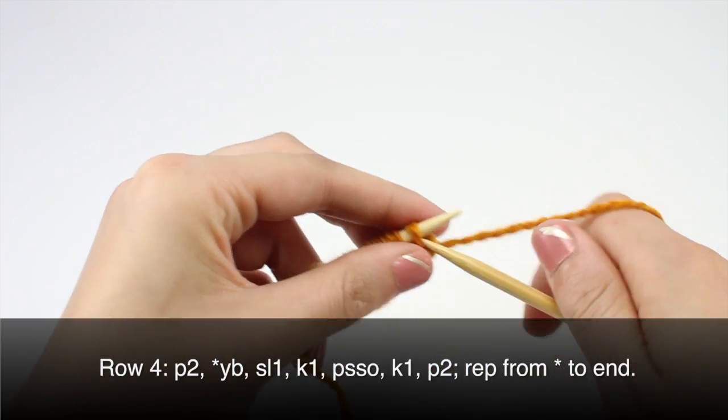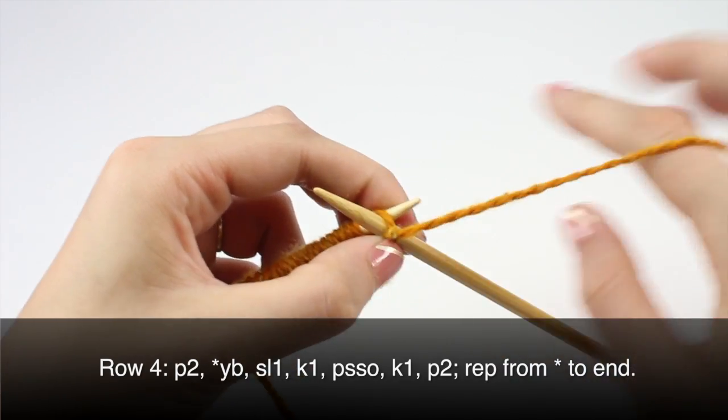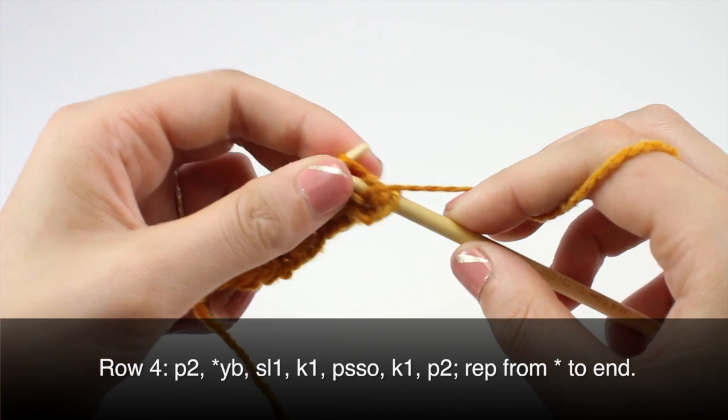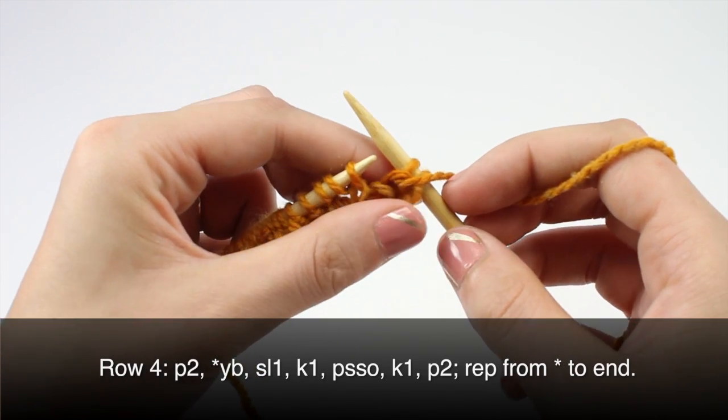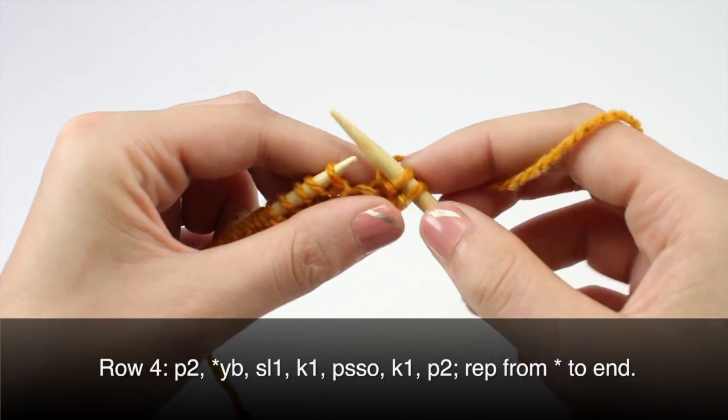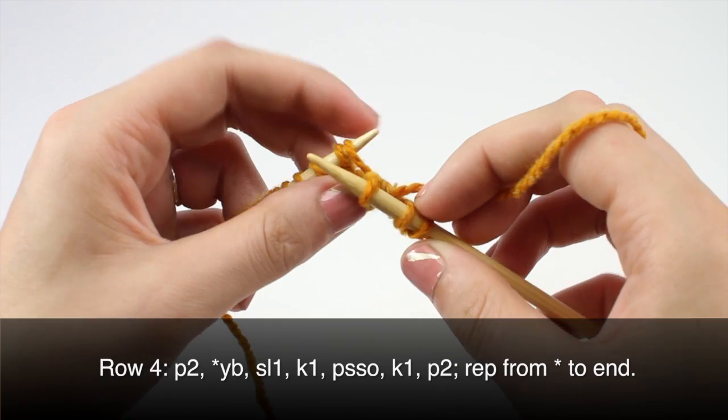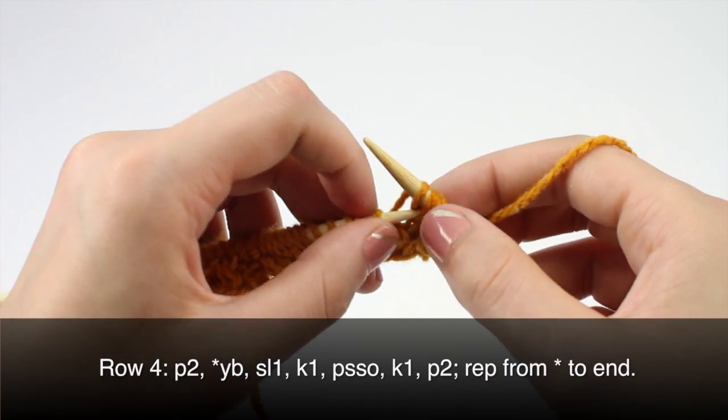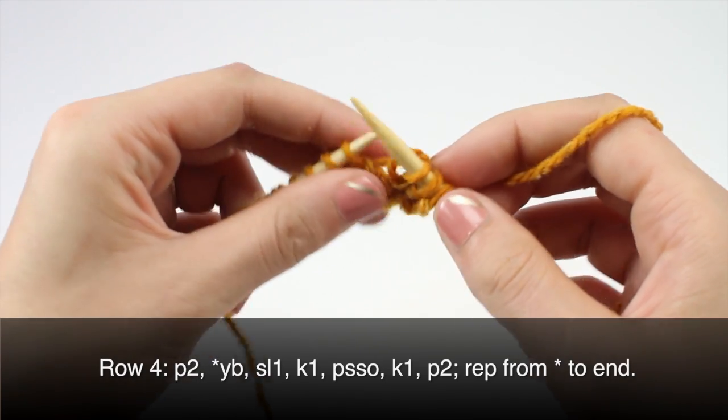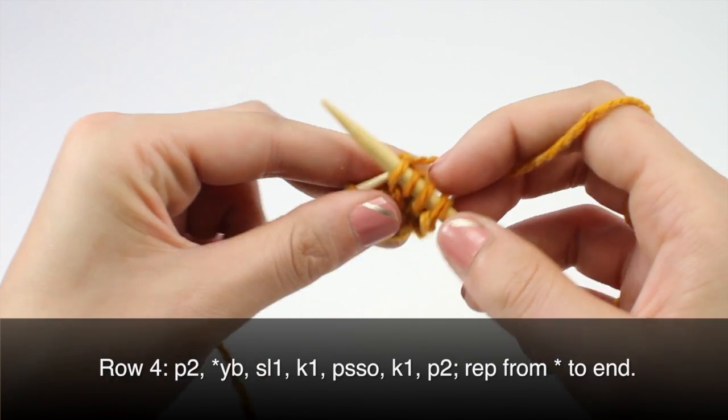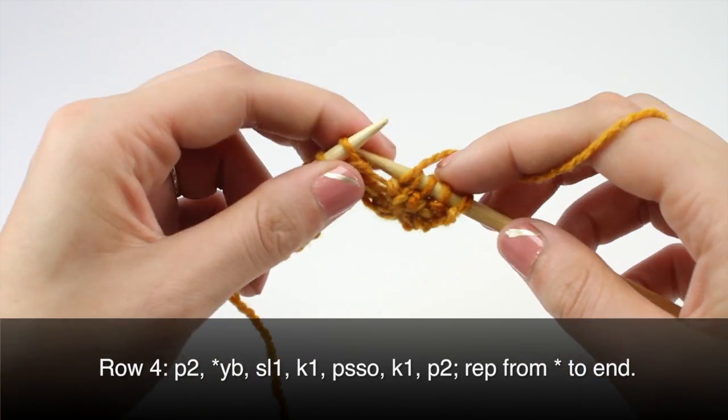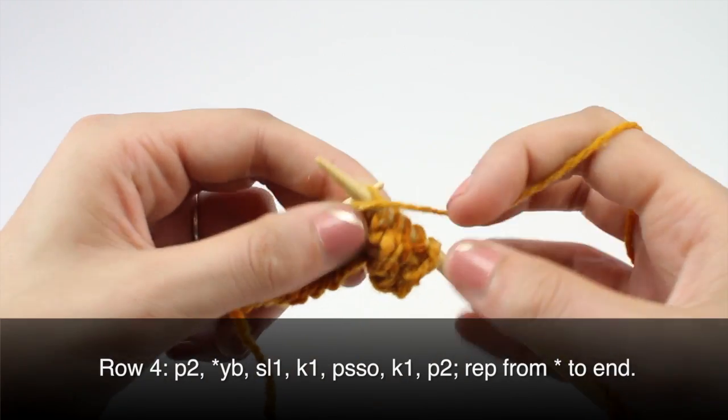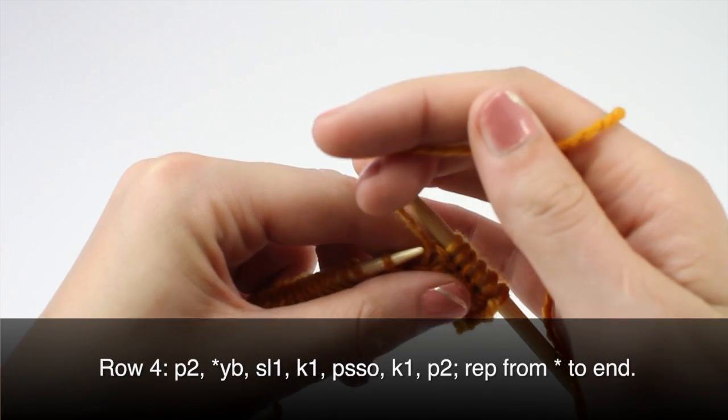Row four. Begin by purling two. And begin your repeat by taking your yarn to the back, slipping one, knitting one, and passing that slip stitch over. And you'll knit one. And purl two. Repeat this until the end of the row.